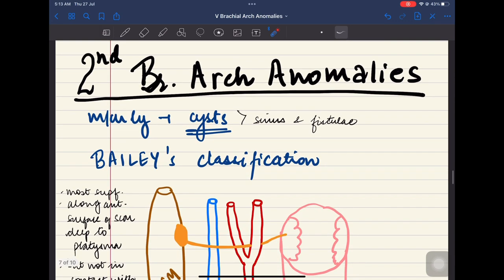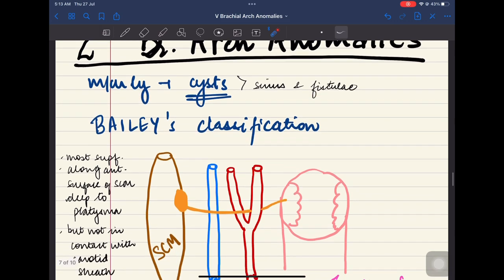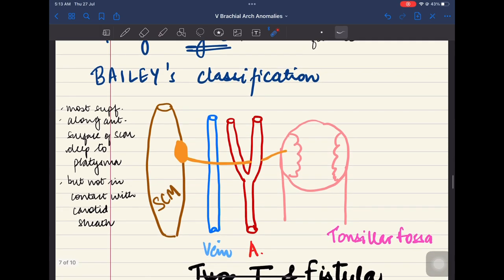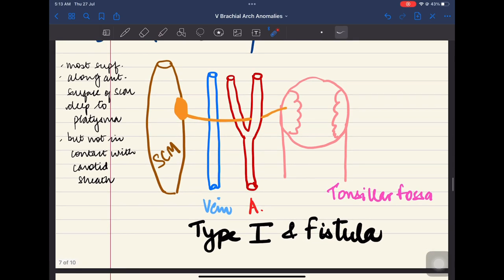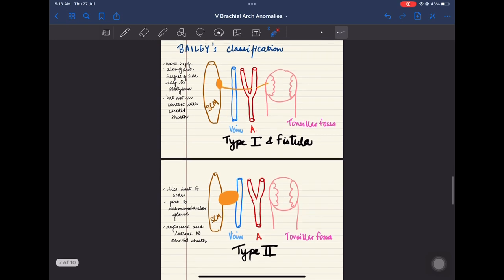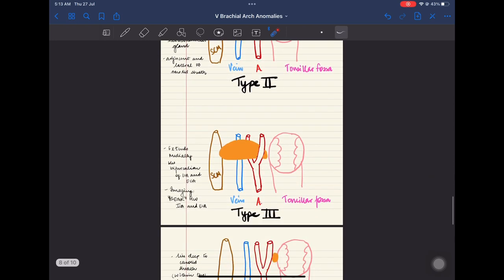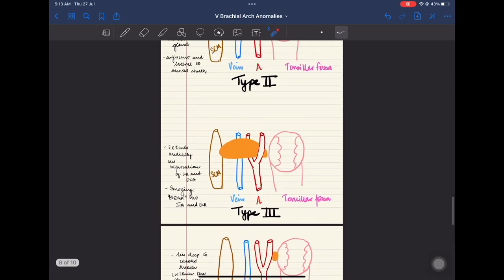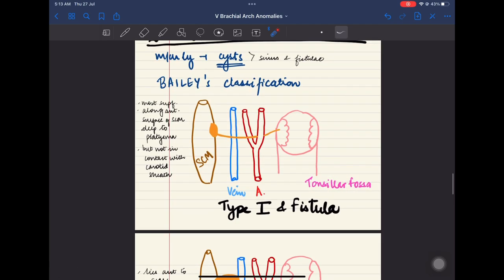Now coming on to the second branchial arch anomalies which are the most common branchial arch anomalies. Most commonly these occur as cysts. Then come sinus and fistulae. Now what is Bailey's classification? Bailey's classification is for second branchial arch cyst anomalies. 1, 2, 3, 4 types. Now let us look at these in detail.